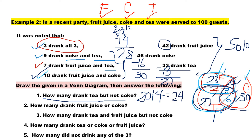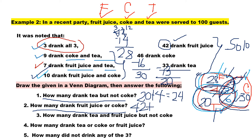Next question: how many drank fruit juice or Coke? When we say 'or,' everything in both circles counts — fruit juice or Coke. The fruit juice total is 42. Then from Coke, we add only the parts not already counted: 30 plus 6. So 42 plus 30 plus 6 gives us 78.